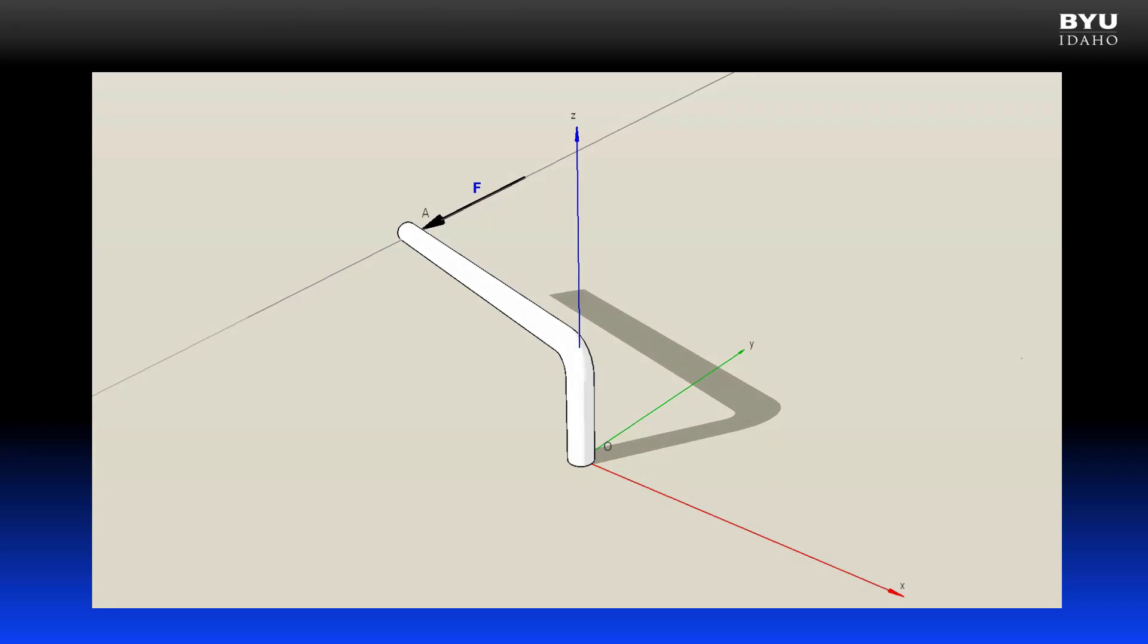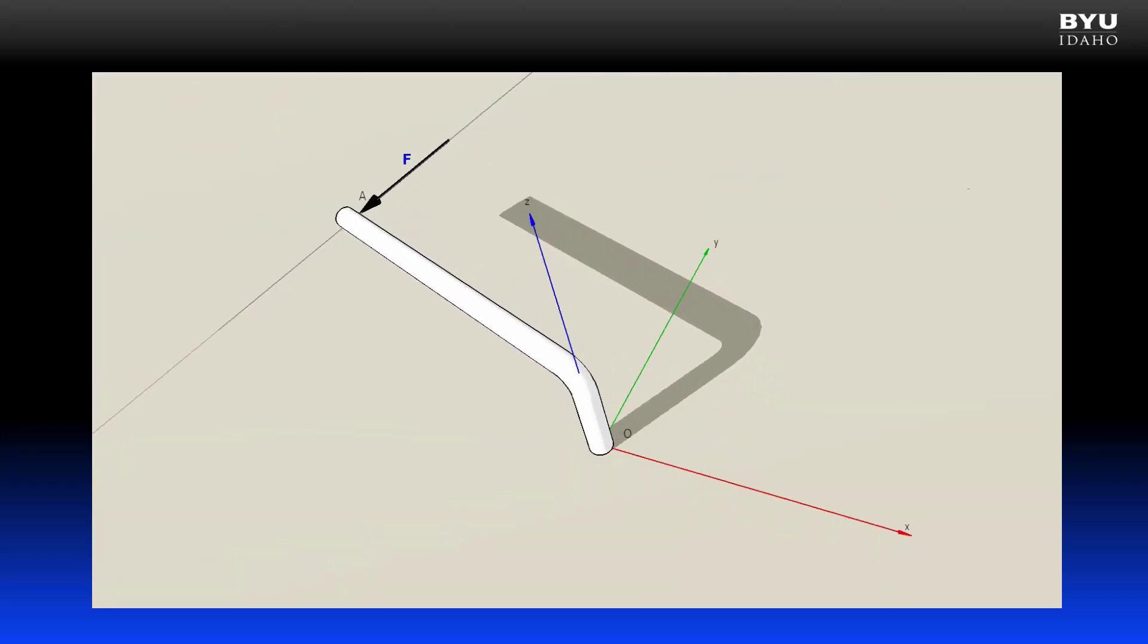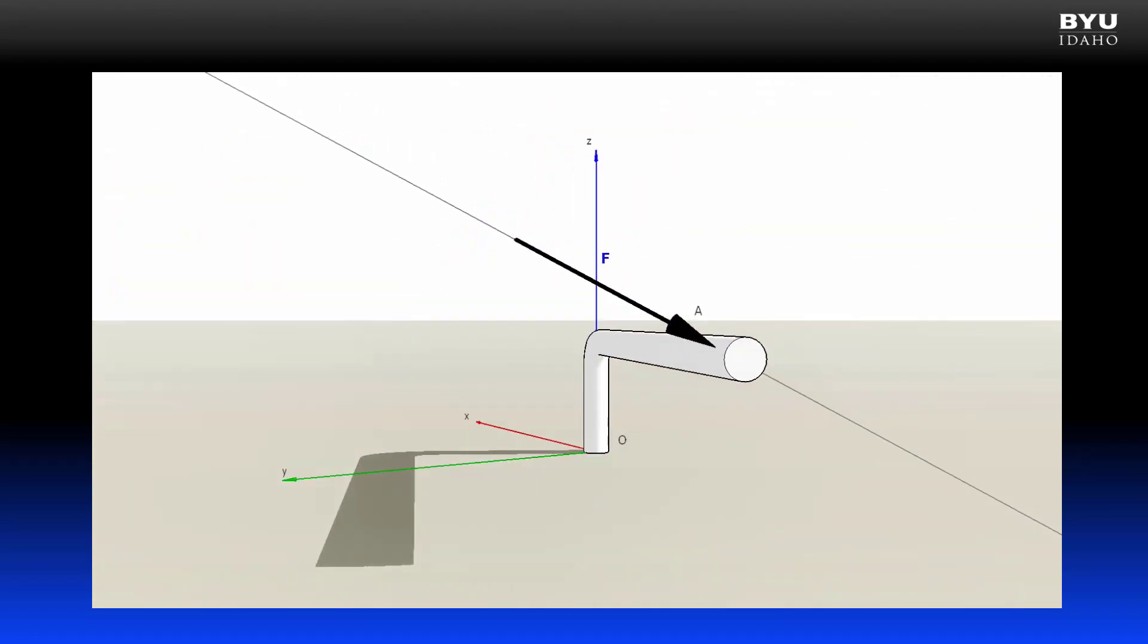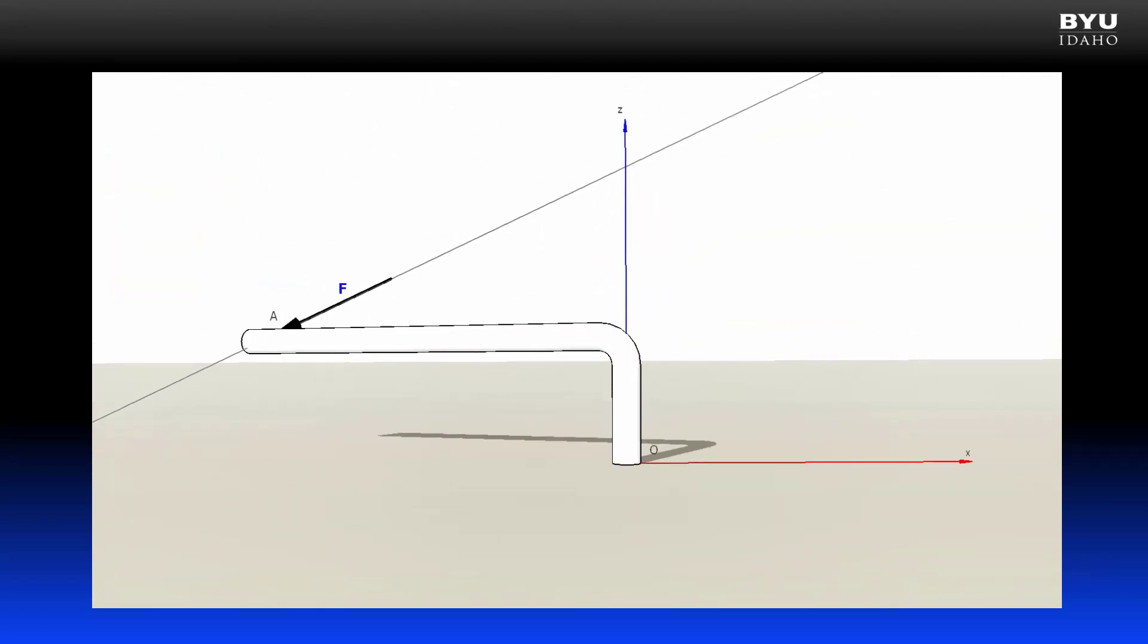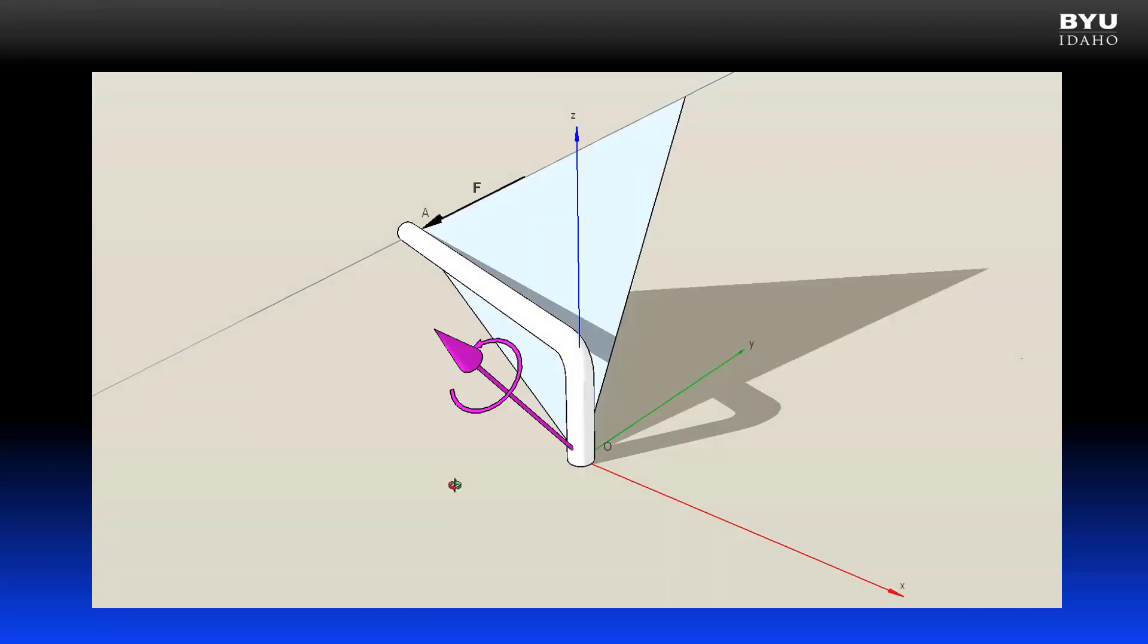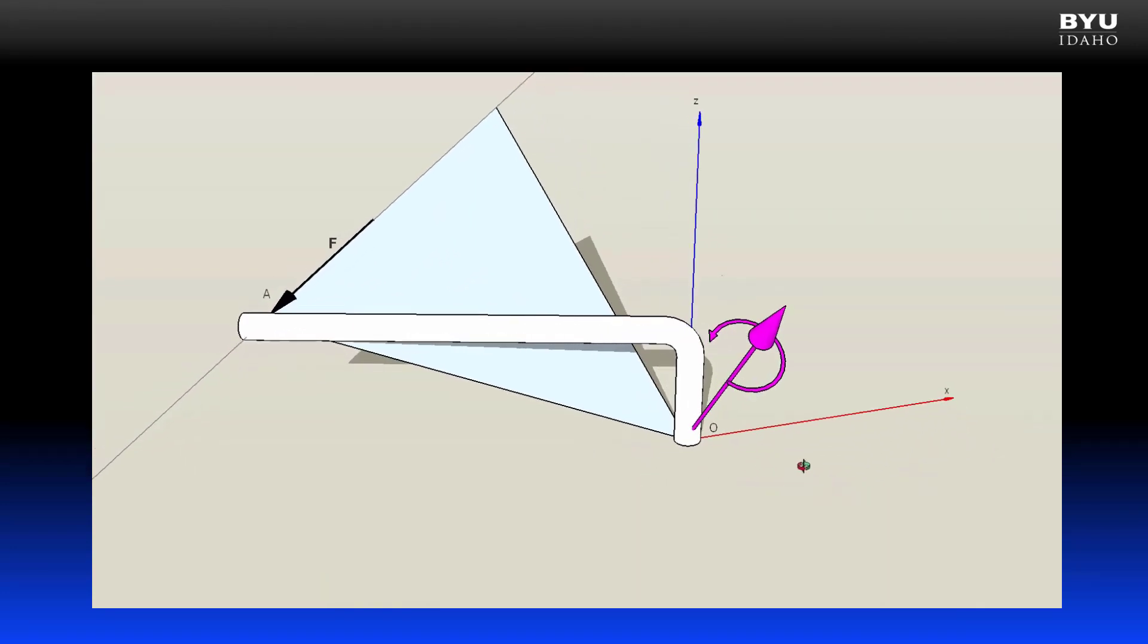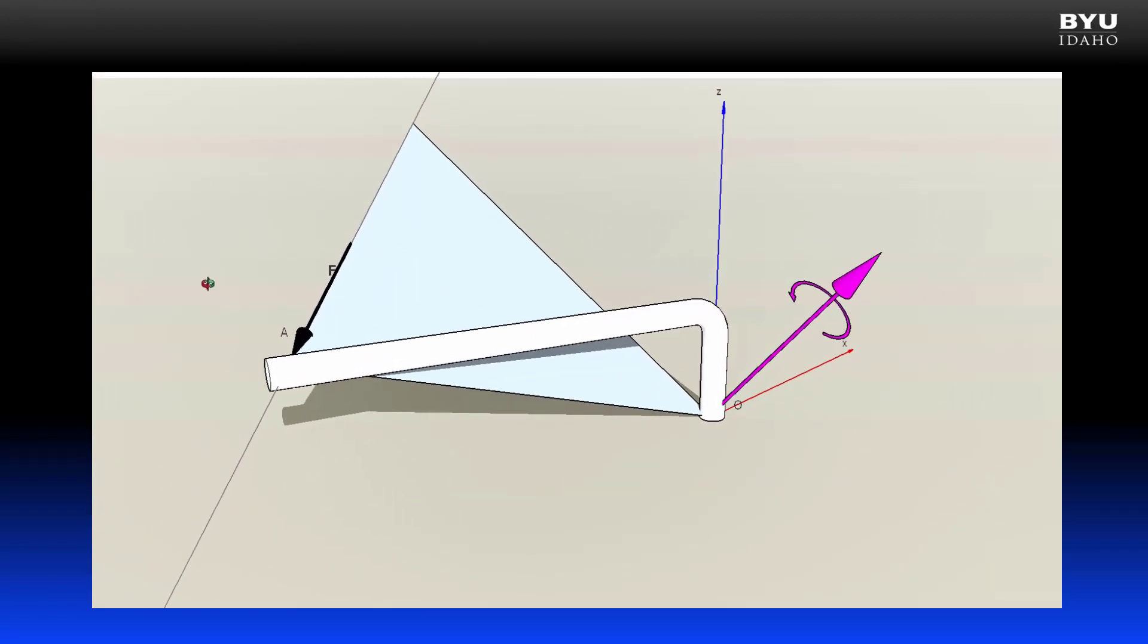Let's look at an example. Here is the bent bar that we considered previously. It has a force acting on it in a random orientation. Here is the resulting moment vector acting at point O. It is perpendicular to the plane shown.